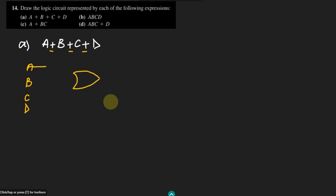So here we have inputs a, b, c, and d, which are added together. For this operation we use an OR gate. Each of a, b, c, and d is given to it as an input, and this gives me the output which I'll call Y. That is the logic circuit representation of expression a.